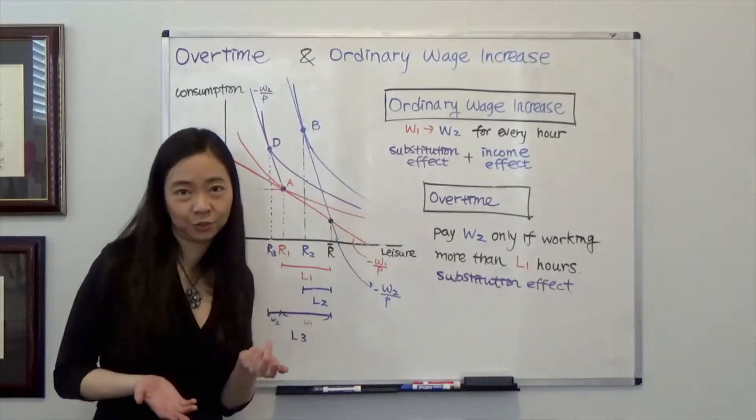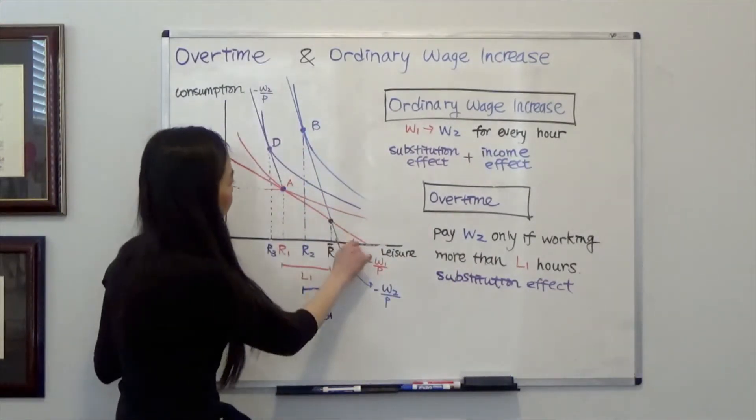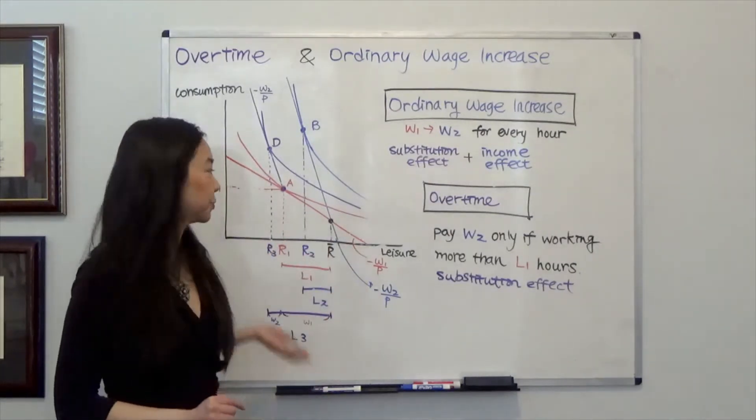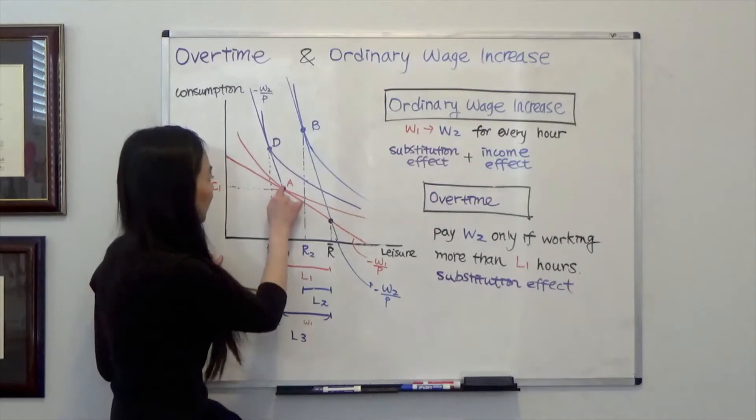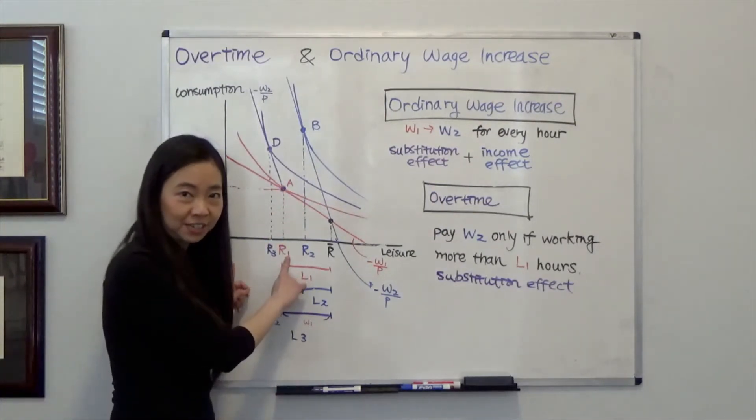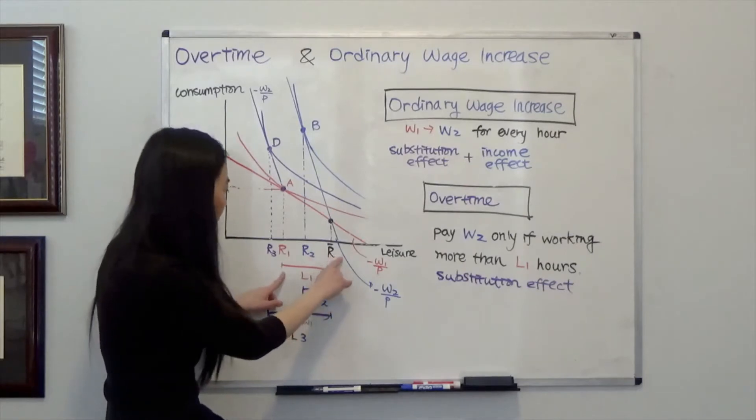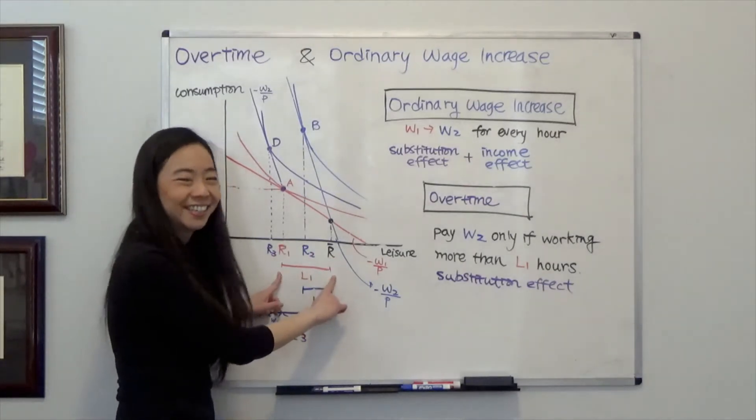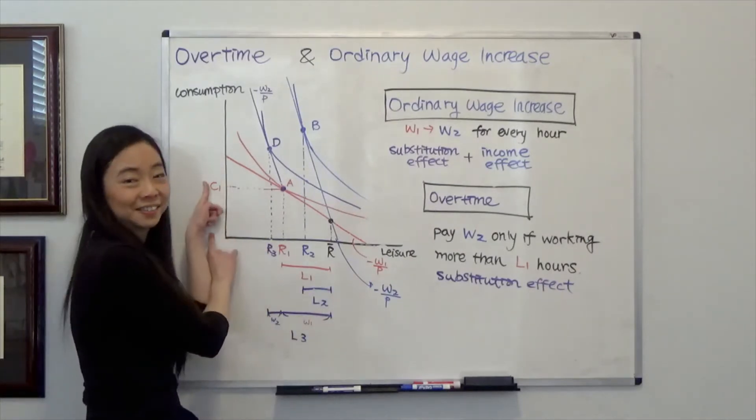Now, suppose your original wage was W1, so we have this red budget line. And in that lowest level of wage, suppose our selection is point A. That means we're going to have R1 hours of leisure and R bar minus R1, that will be L1 hours of work. And our consumption is C1. So that's our original choice.